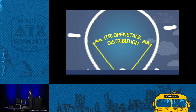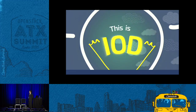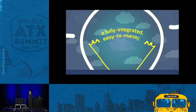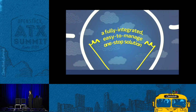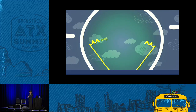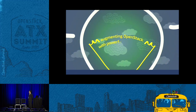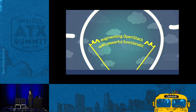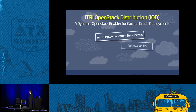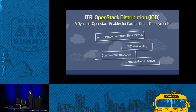ITRI OpenStack Distribution — this is IOD, a fully integrated, easy-to-manage, one-stop solution that saves time and cost, augmenting OpenStack with powerful functionality. IOD is a dynamic OpenStack enabler for carrier-grade deployments.